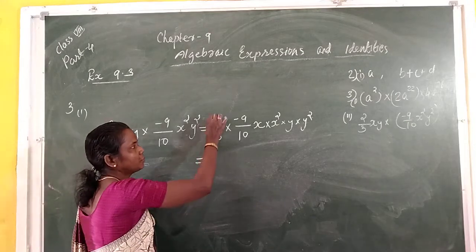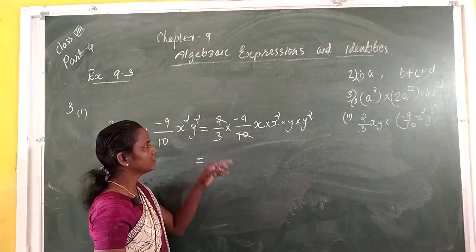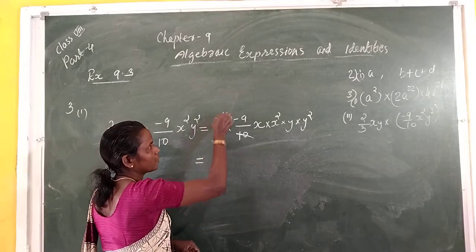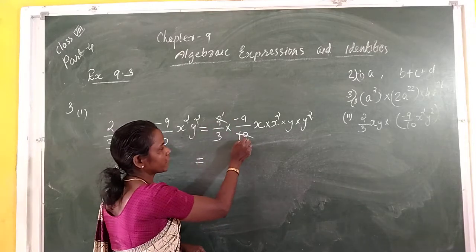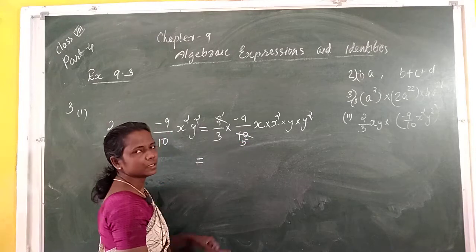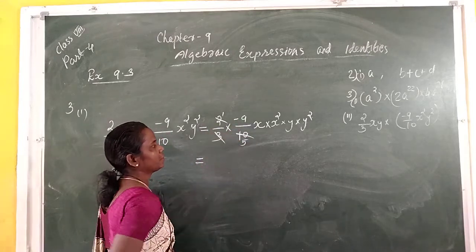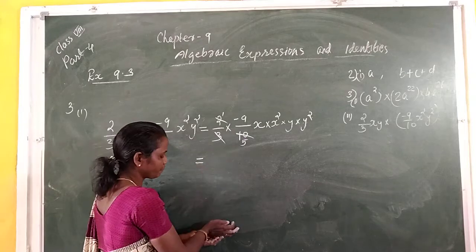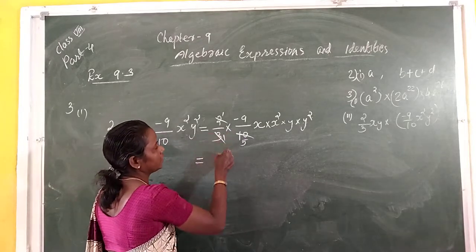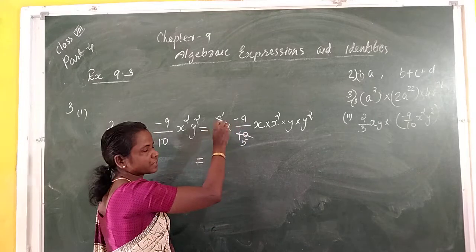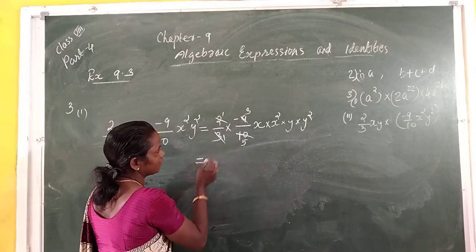We can simplify: 2 divided by 2 is 1, and 10 divided by 2 is 5. Then 3 divided by 3 is 1, and 9 divided by 3 is 3. So the numerical factor simplifies to negative 3/5. Alternatively, multiply directly: 2 times 9 over 3 times 10 gives 18/30, and the simplest form is 3/5, negative.